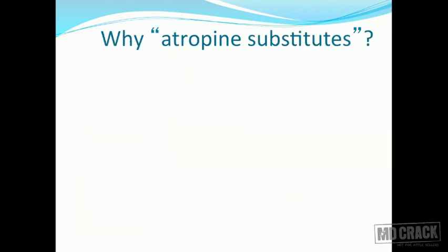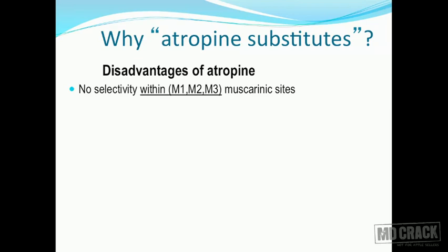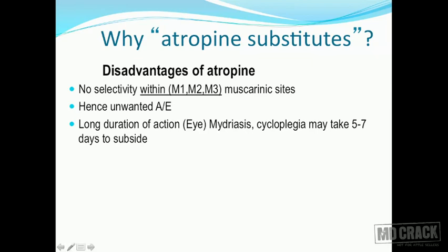Since physostigmine is able to reverse also the CNS effects of atropine overdose because of its property of crossing the blood-brain barrier, physostigmine is preferred as the drug of choice for treating atropine overdose. Atropine does not have selectivity between muscarinic receptor sites. This is why we need atropine substitutes. Disadvantages of atropine: number one, no selectivity within M1, M2, and M3 receptors, hence you get unwanted adverse effects. Additionally, when atropine is used in the eye as a mydriatic, it has a very long duration - mydriasis and cycloplegia may take five to seven days to subside, causing blurriness of vision and photophobia.